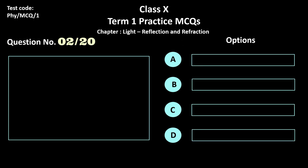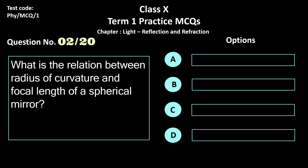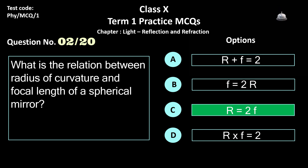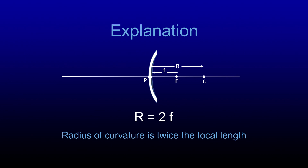Question 2. What is the relation between radius of curvature and focal length of a spherical mirror? Options: a) R + F = 2, b) F = 2R, c) R = 2F, and d) R × F = 2. The correct answer is option c, R = 2F. The radius of curvature of a spherical mirror is twice the focal length.